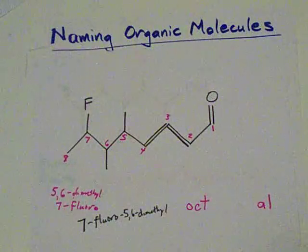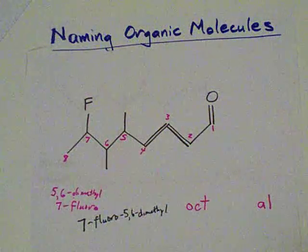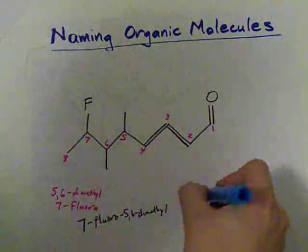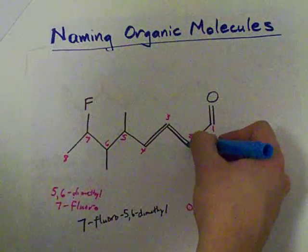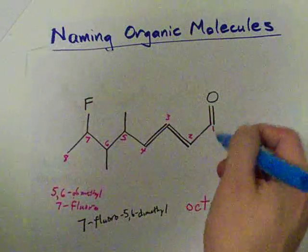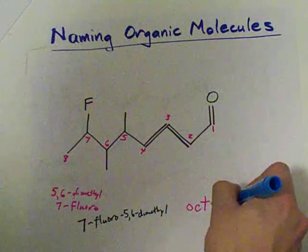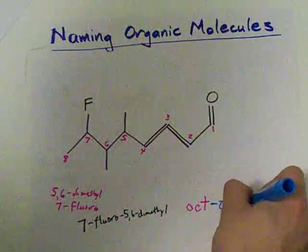The last step is if there are any double and triple bonds that you haven't accounted for. Why, yes, there are. In fact, there are two double bonds. One starting at carbon two and one starting at carbon three. All right. So that makes this a 2,3-diene.